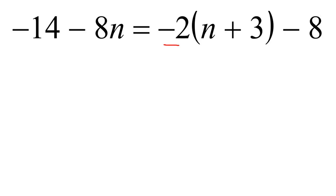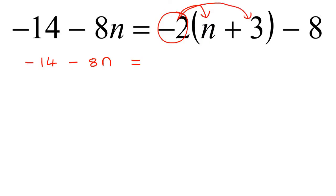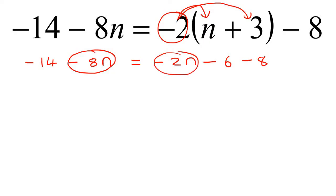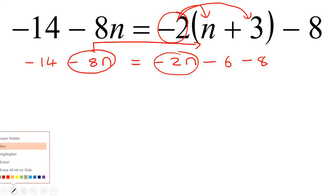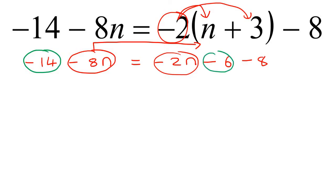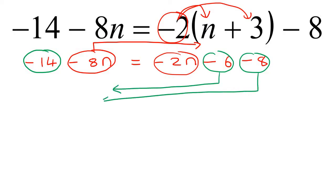The first thing you should identify here is that this example has a bracket, so once again the first step we want to do is get rid of the bracket. We say minus 14 minus 8n equals... Now you're going to take this minus 2 and multiply it into the bracket, giving us negative 2n minus 6 minus 8. Now we put all the variables on one side and all the numbers on the other side. I'm going to put all the variables on the right-hand side, so this one moves over. And I'm going to take all the numbers — these three over here — to the left-hand side, so minus 6 and minus 8 both have to move.